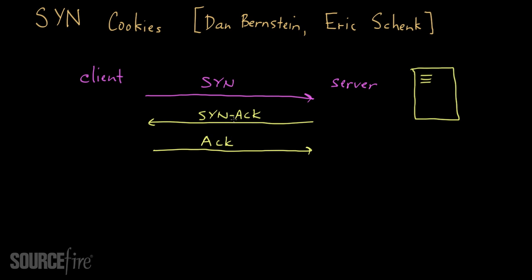In between the SYN ACK and the ACK, the server has space allocated and the connection is what's called half-open. Because the server has this half-open connection, it's maintaining that space until the connection is fully opened. If multiple clients — or even the same client — send multiple SYN messages, the server ends up allocating all of its space to maintain information about those SYN messages and won't be able to deal with new incoming messages. A new legitimate party trying to connect will have its SYN request dropped, or the server will crash, because of all these half-open connections consuming space.